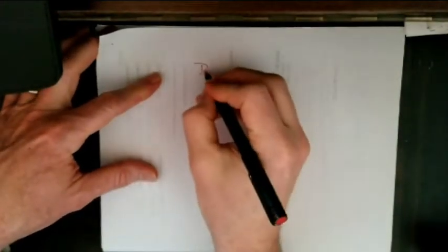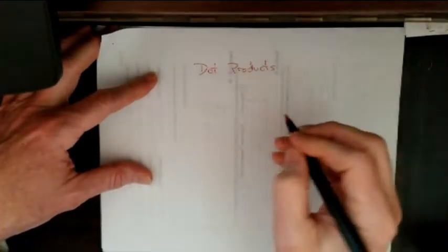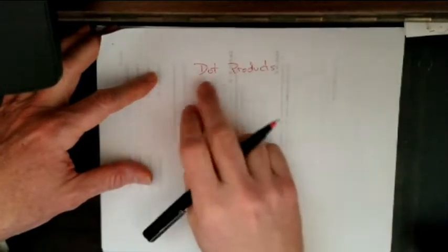This is a review of dot products. As you might recall, there are two types of multiplication with vectors.